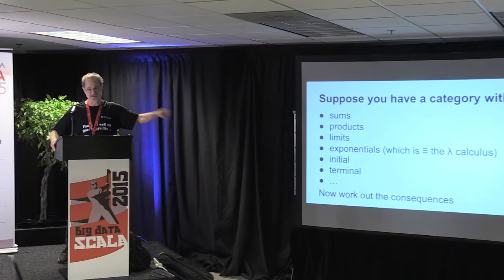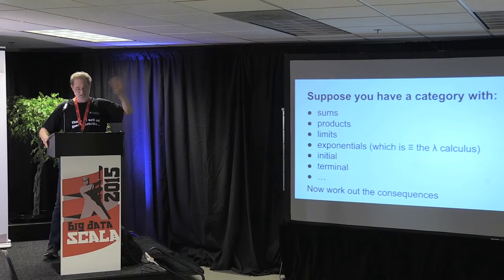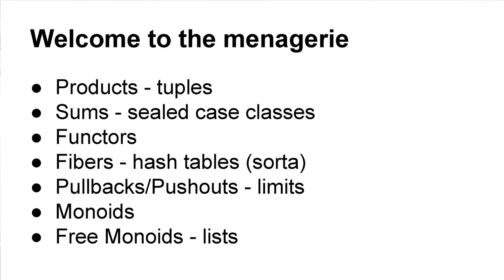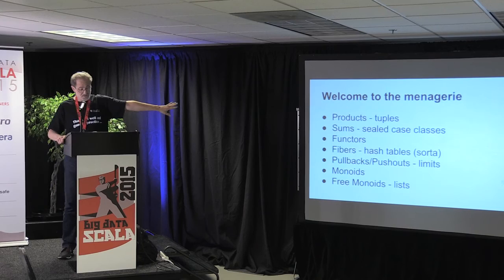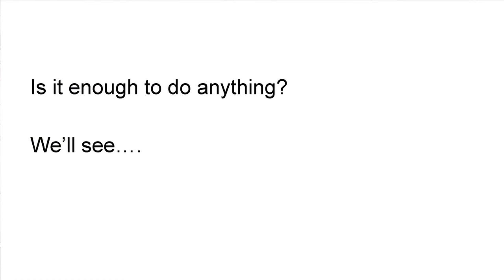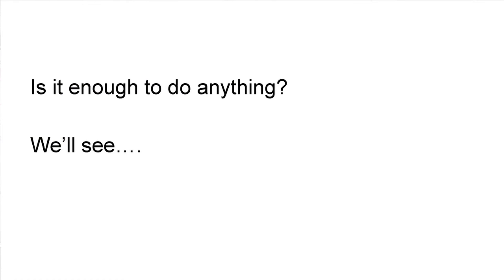I should point out: if you have a category with exponentials, then you have the lambda calculus — hence you can do anything. So at a certain level, one can do everything we want to do programming-wise in category theory directly. The part of the menagerie I want to get into — because I need it for certain things — includes products, sums, functors, fibers (which are kind of like hash tables), pullbacks, pushouts, monoids, and free monoids, which are a generalization of the notion of a list.